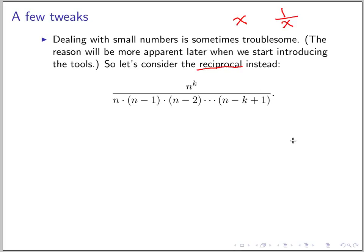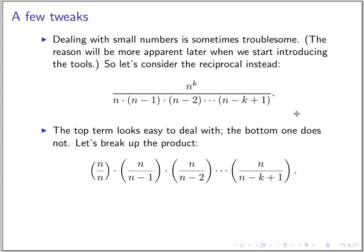We can see that the top term is easy to deal with — it's just some number to the k — but the lower terms, the numerator looks difficult. So let's break down the terms to see how they are. We break it down into a product of k terms, because we have n minus 0 and n minus k minus 1, so you have k terms.